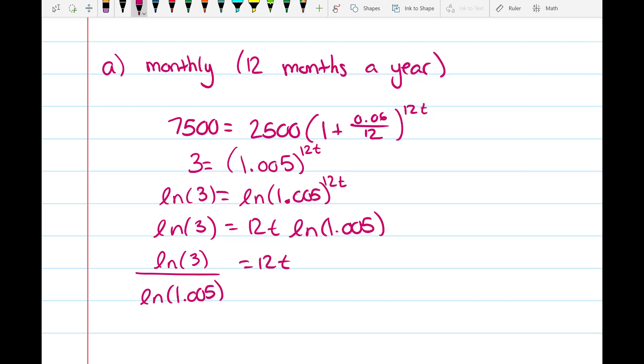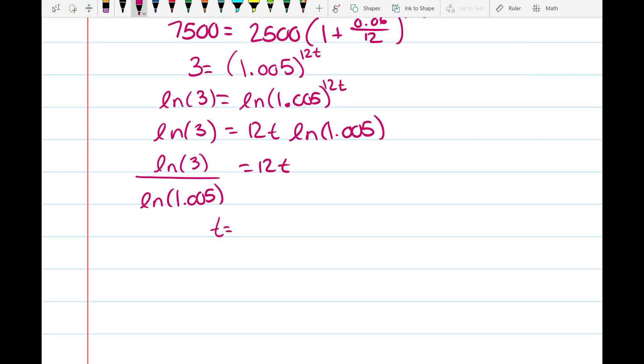So now you divide both sides by ln(1.005), and you get ln(3)/ln(1.005) = 12t. Divide both sides by 12, and this is ln(3) divided by 12 × ln(1.005), which when you put into a calculator you get t is about 18.355 years.